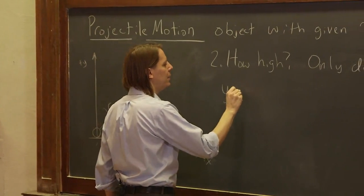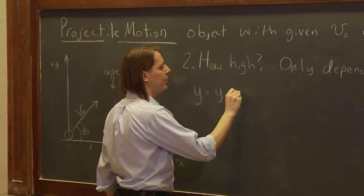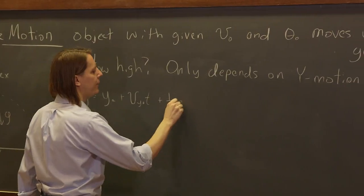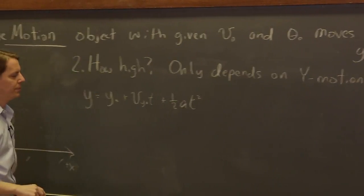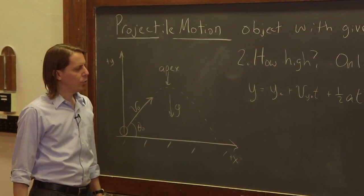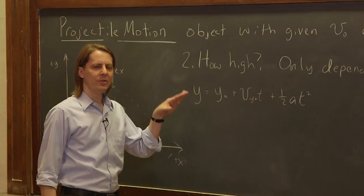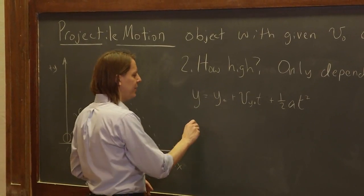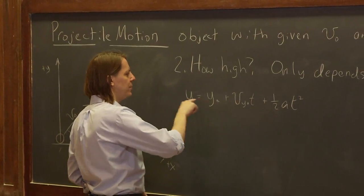The formula is y equals y naught plus v y naught t plus one half a t squared. We're going to use this equation to find a specific height at a specific time. This is the general equation of y as a function of time.